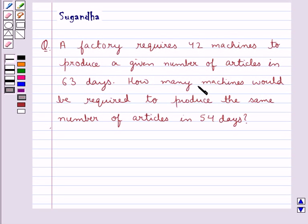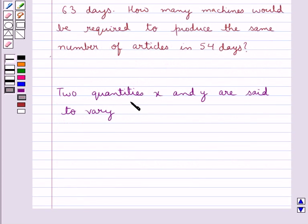How many machines would be required to produce the same number of articles in 54 days? Two quantities, x and y, are said to vary in inverse proportion.